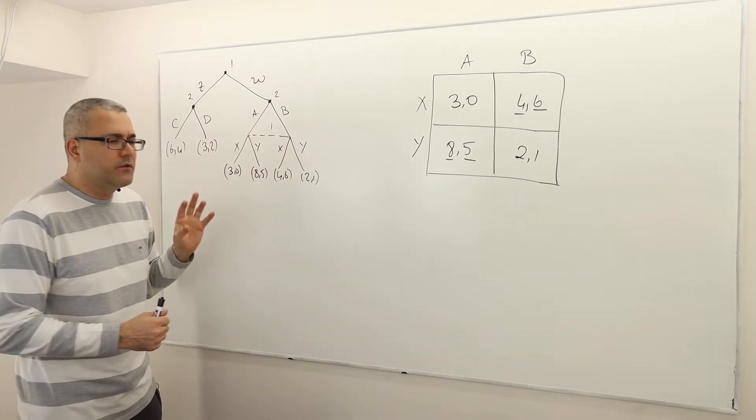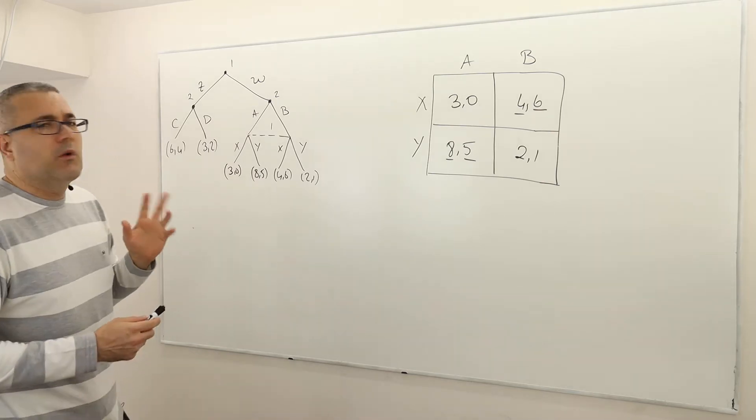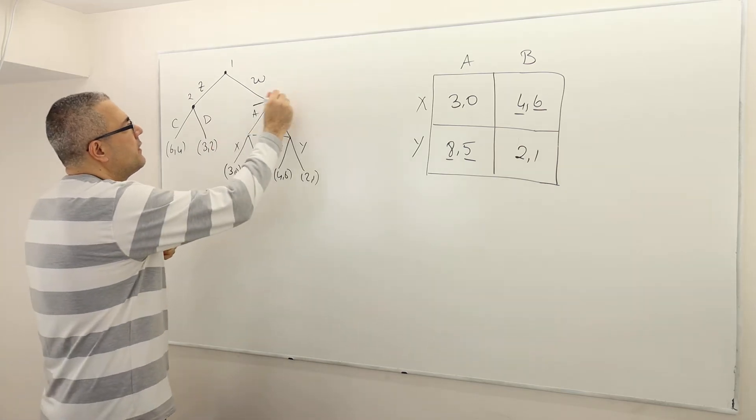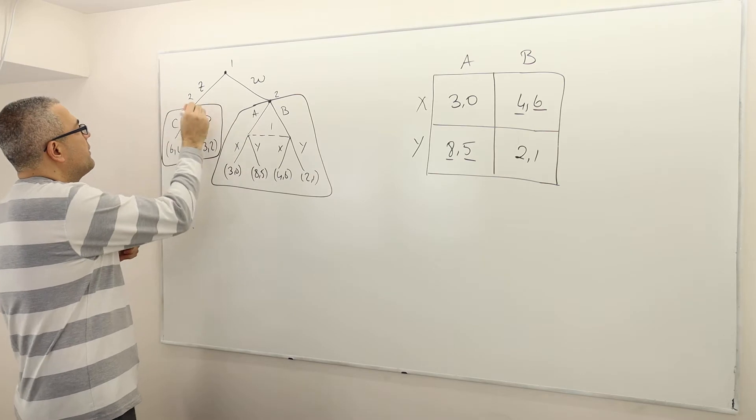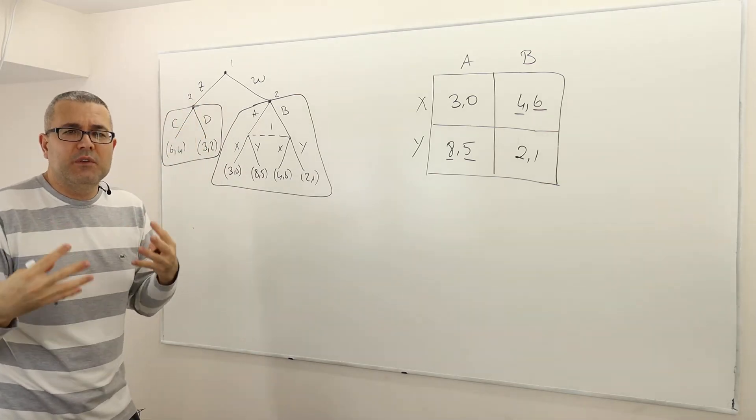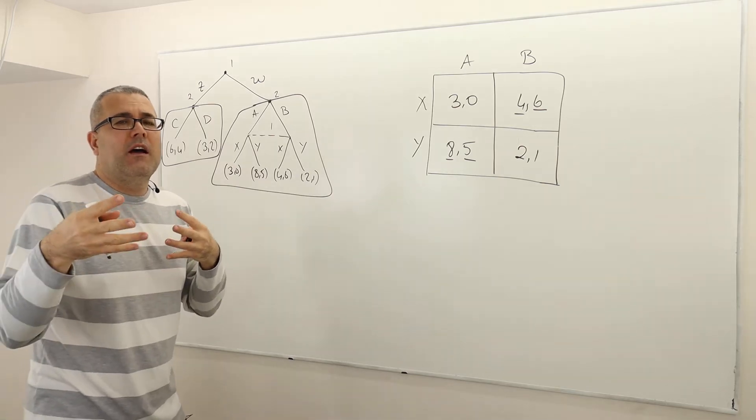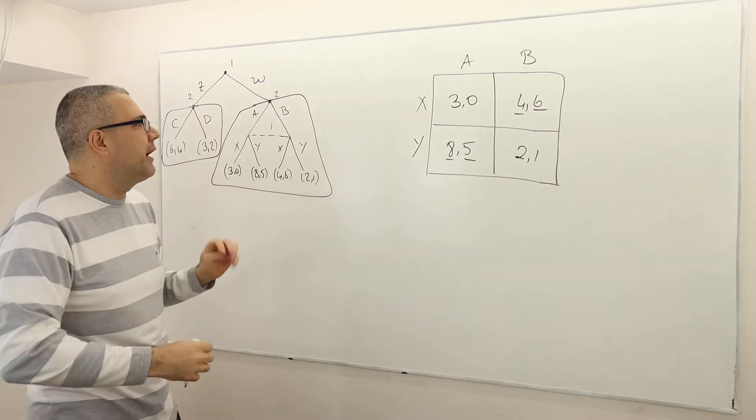So when you try to solve the subgame perfect Nash equilibrium of this game, well here, remember there are two proper subgames. So this is the first proper subgame, and this is the second proper subgame. That means you can basically take these subgames as individual games and analyze them, find their Nash equilibria or optimal strategies, and plug them back.